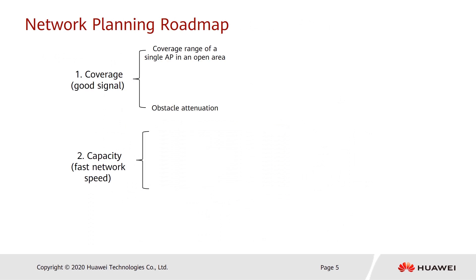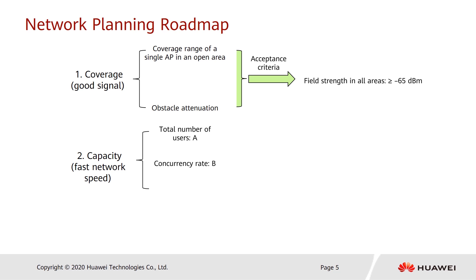Good signal coverage is achieved when the field strength in all areas is greater than or equal to minus 65 dBm. Following good signal coverage, we need to consider the capacity requirement, which is usually affected by three factors: total number of users, concurrency rate, and single-user bandwidth. Based on the required per-user bandwidth and single AP performance, we can know the number of concurrent users allowed by a single AP.